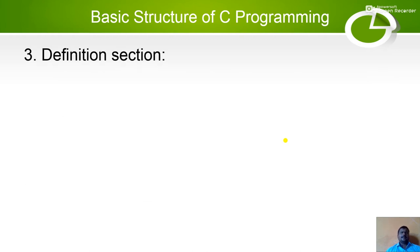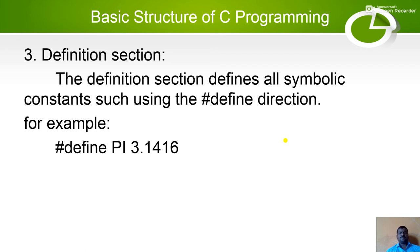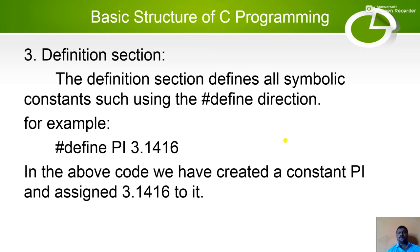The third section of the C program is known as the define section. The define section defines all symbolic constants using the hash define directive. For example: hash define PI 3.1416. In the above code, we have created a constant PI and assigned 3.1416 to it.